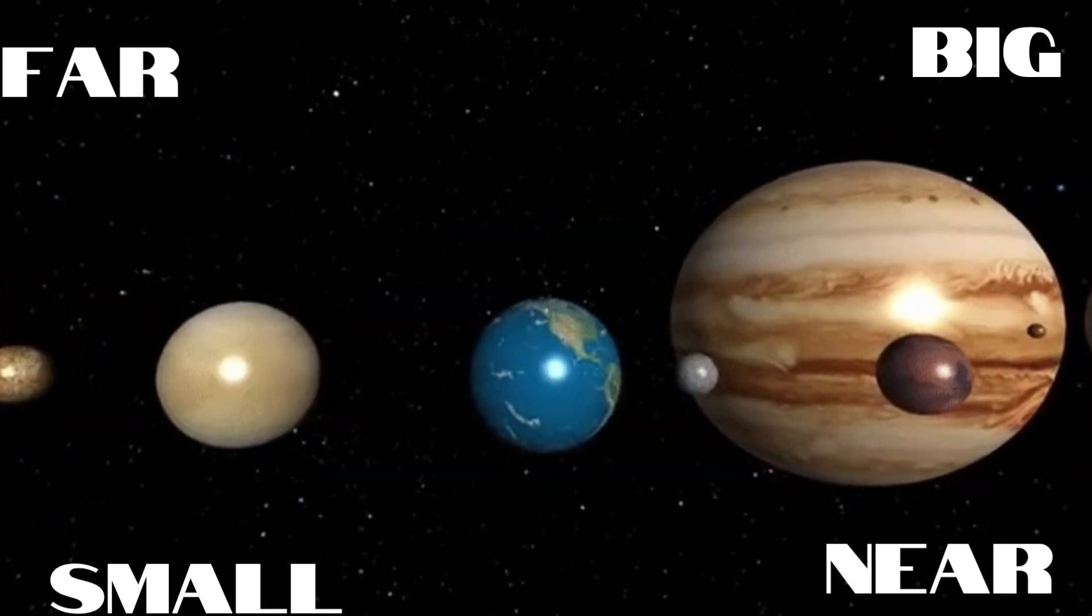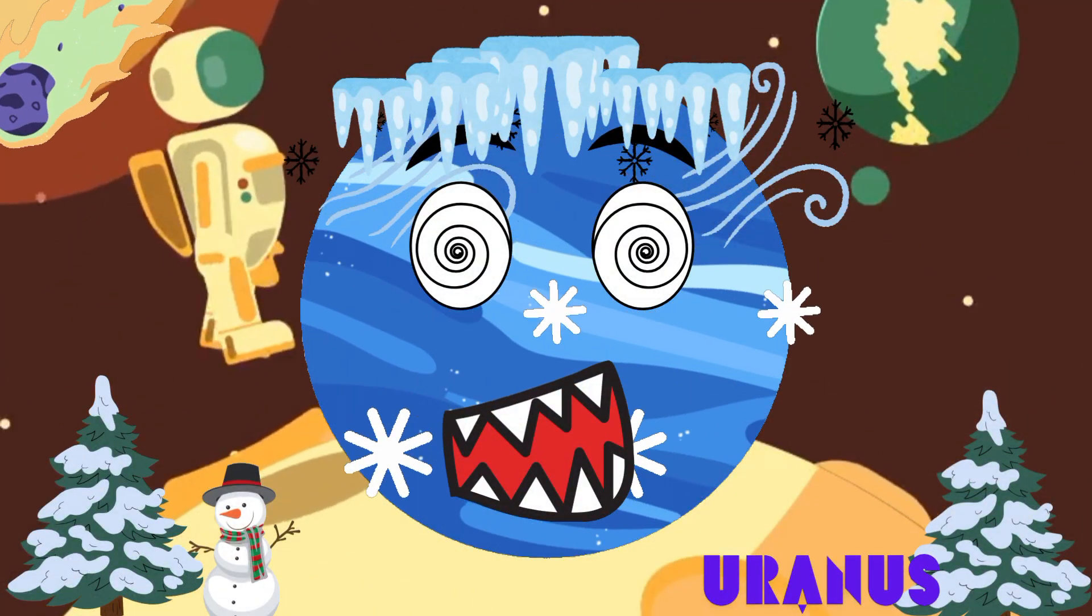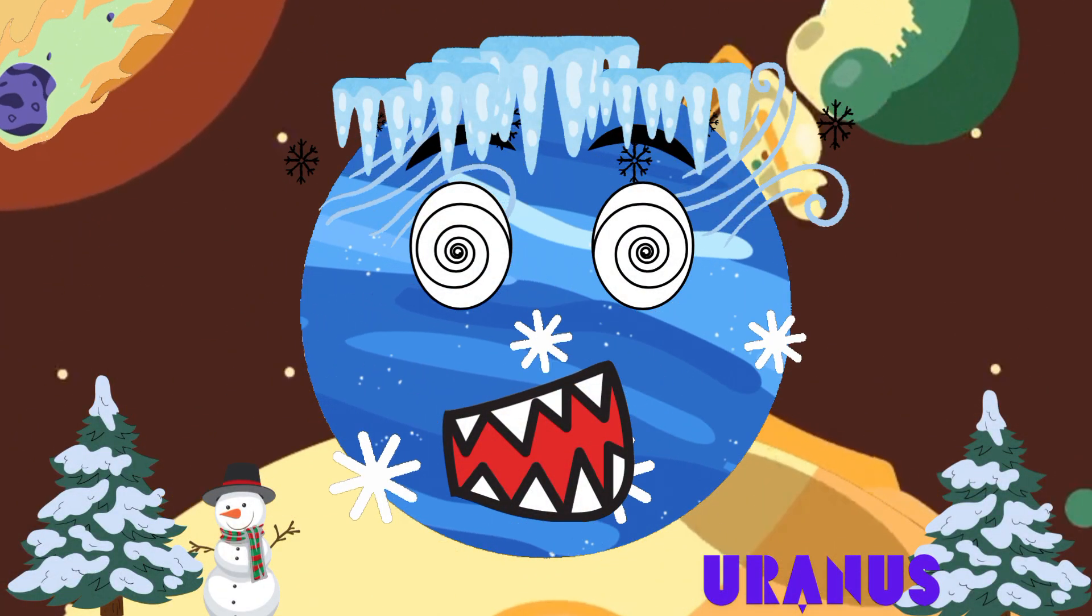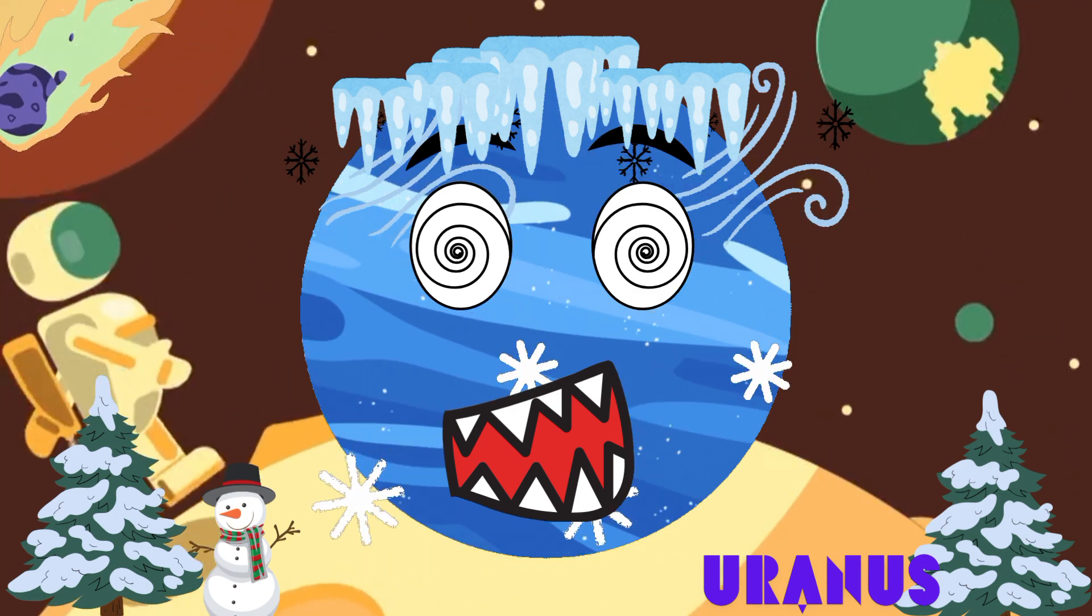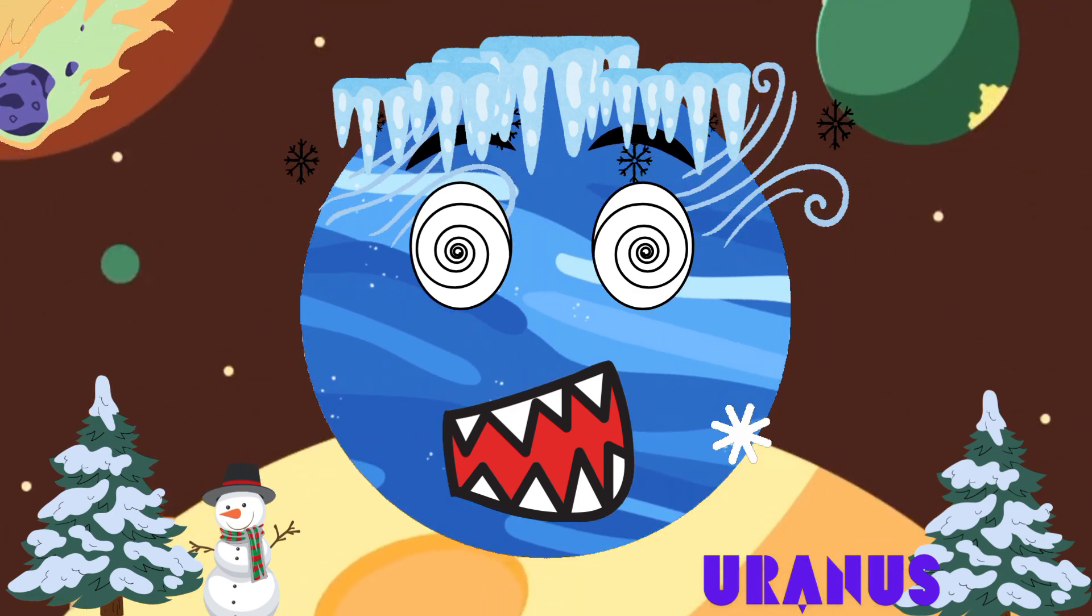The solar system, fun to know. Uranus is icy, with a tilt to its spin. A pale blue planet, with its rings, nice and clean.